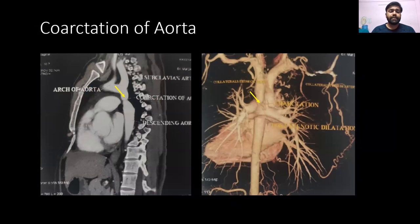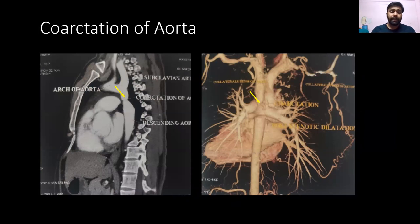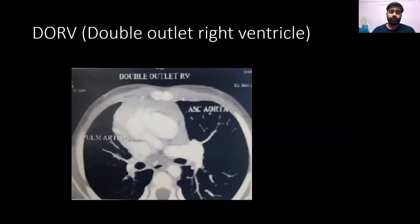Coarctation of the aorta is characterized by kinking of the arch of the aorta, which disturbs the origin of the left subclavian artery. It can be of two types: preductal and postductal. Postductal is the most common type and is seen in adults, while the preductal type is seen in infants.